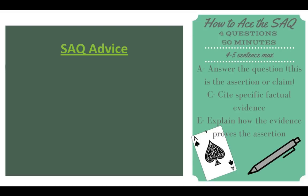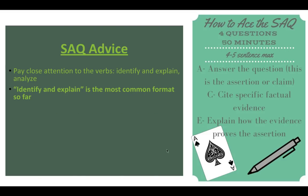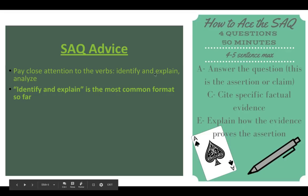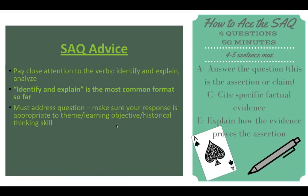So how do you ace the SAQ? Note that this slide hasn't been updated — it says four questions, 50 minutes, but it should say 40 minutes. Here's the deal: when you're doing the SAQ, A — answer the question; C — cite specific evidence; E — explain how that evidence proves the assertion. Pay close attention to the verbs: most will generally be identify and explain. So identify, provide evidence, explain the evidence. Make sure you're addressing the question and your response is appropriate to the theme.